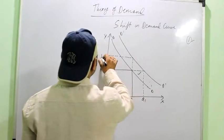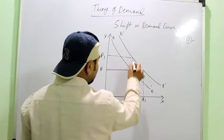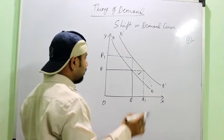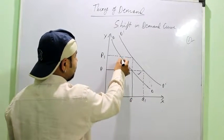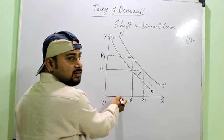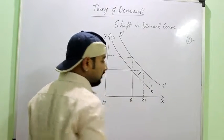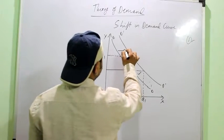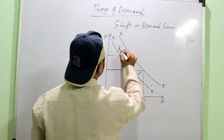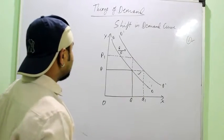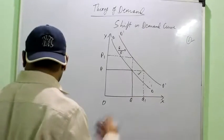Now another point where the price rises but still the demand remains same. If it would have been movement, then quantity should have been this Q1 lying on the same curve, but the quantity did not decrease. So it means demand is lying on the other curve or curved towards the right. You can see it is shifting towards the right or it is moving forward.